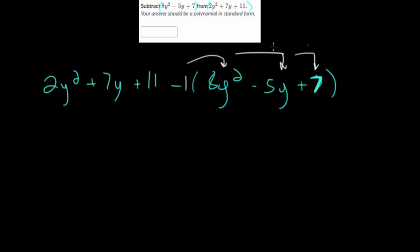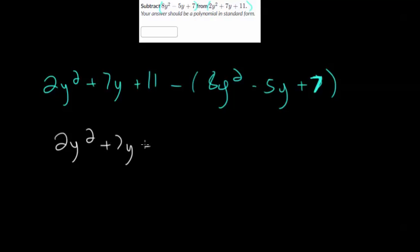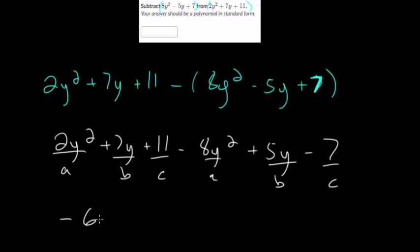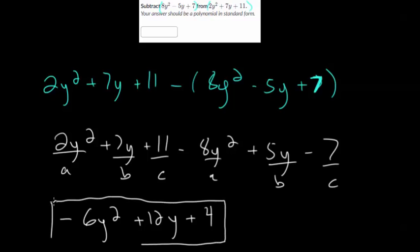We're subtracting the whole thing, and effectively every term in the expression is being multiplied by negative one. This negative sign is going to distribute to all of those terms. So let's distribute the negative: you get 2y squared plus 7y plus 11 minus 8y squared, this becomes plus 5y, and this becomes minus 7. Essentially, all the signs in the polynomial you're subtracting became their opposite. Now combining like terms — call the y squareds A, the y terms B, and the constants C. 2y squared minus 8y squared is minus 6y squared. 7y plus 5y is 12y. And 11 minus 7 is positive 4. So the final difference is minus 6y squared plus 12y plus 4.